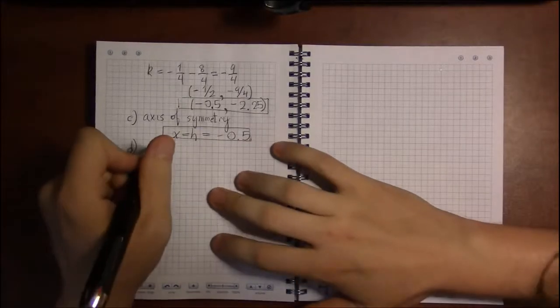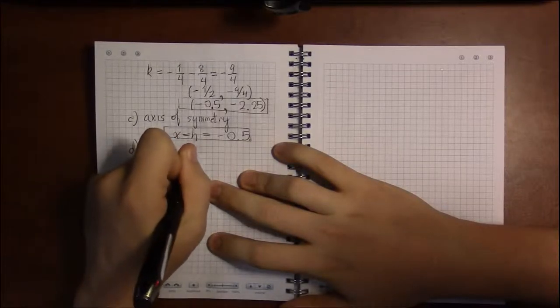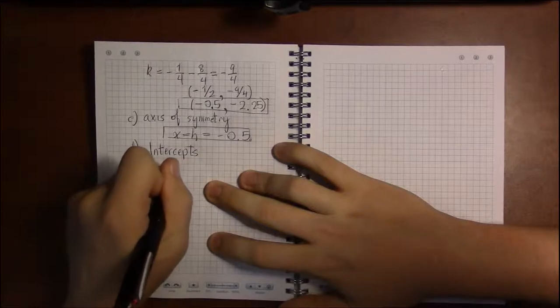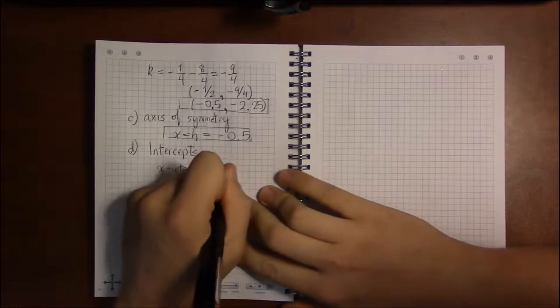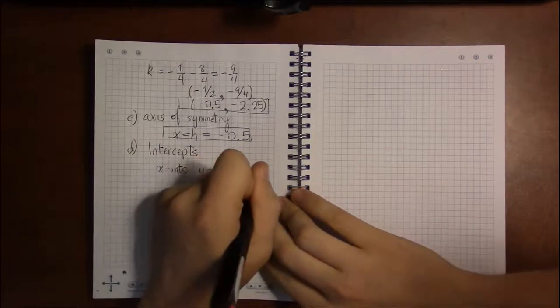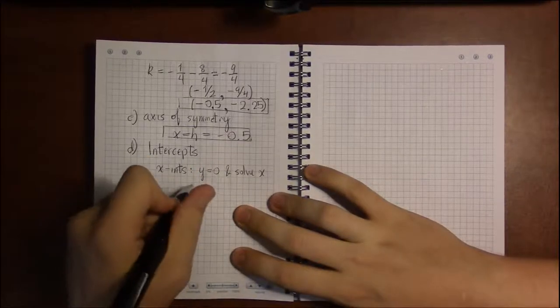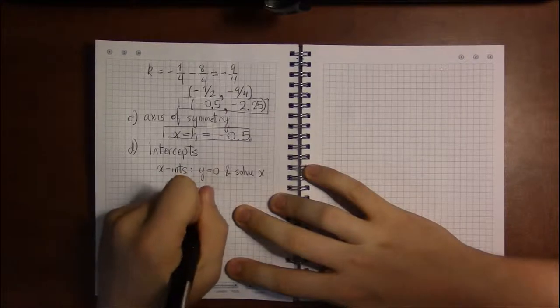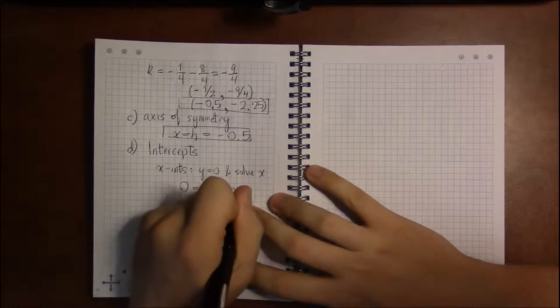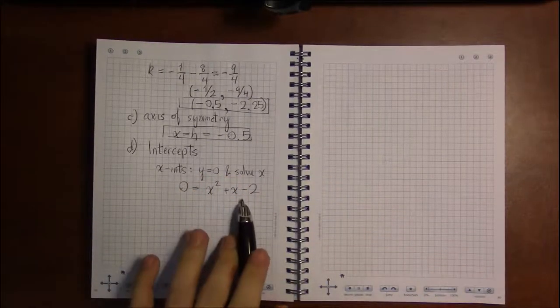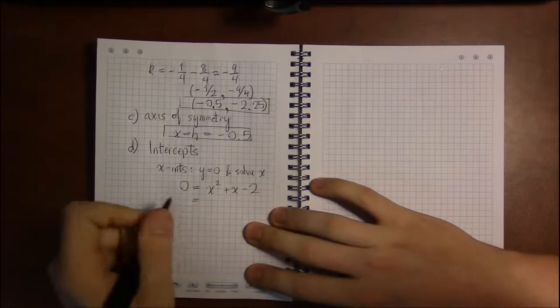Part D asks us to find the intercepts. So that's a two-parter. We need to find the x-intercepts where we set y equal to 0 and solve for x. So setting y equal to 0. We have 0 equals x squared plus x minus 2. This will be difficult if you do not see that this factors.